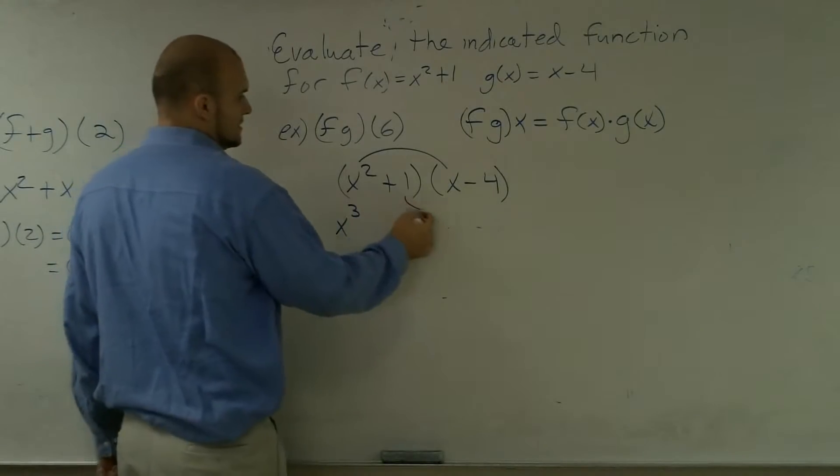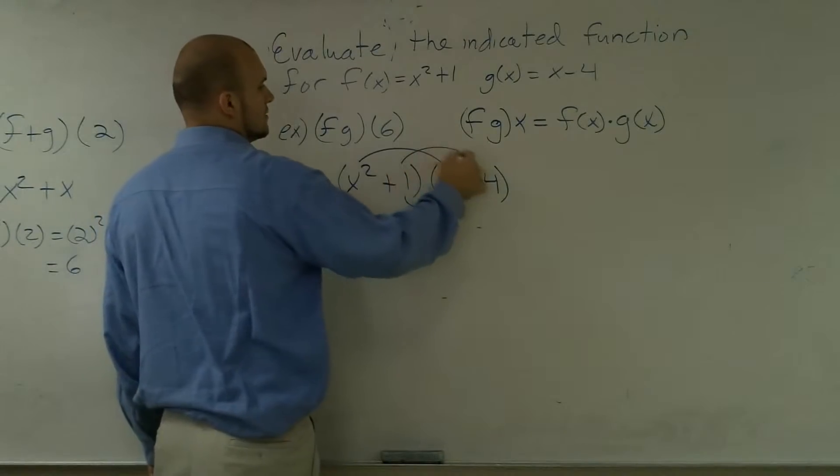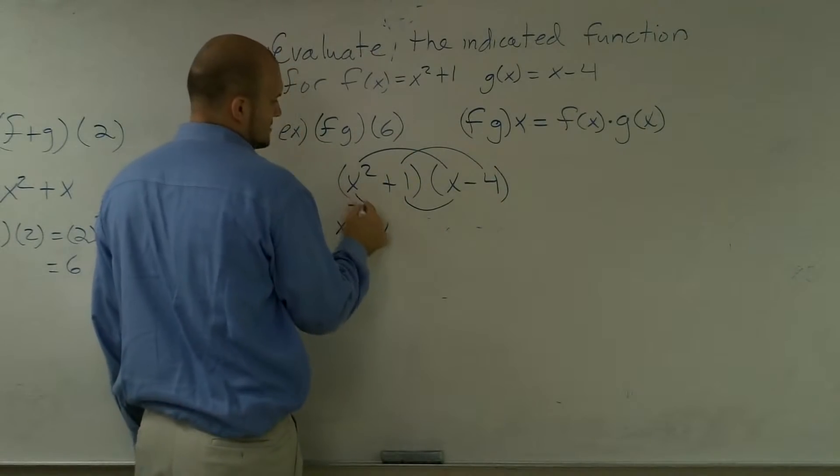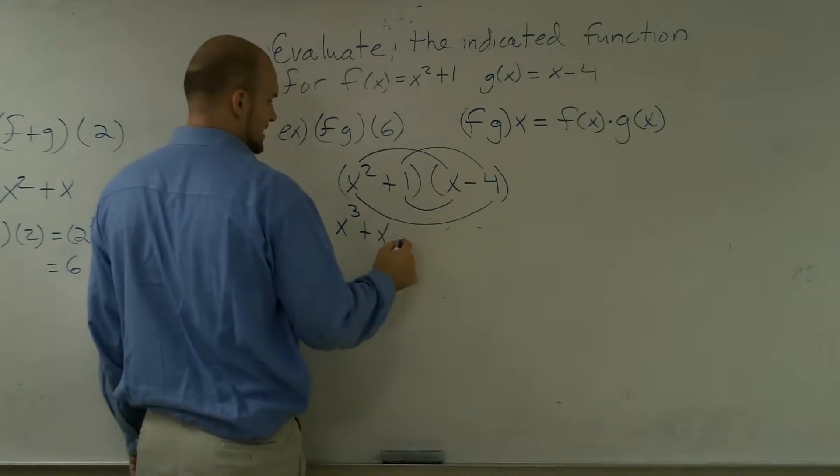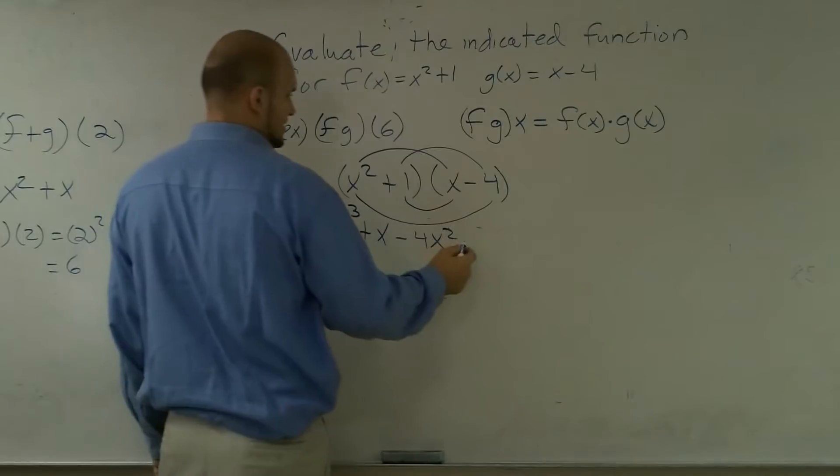OK? And then we'll do the inside and outside, which would be a negative 4x squared. And then we'll do the last, which would be negative 4.